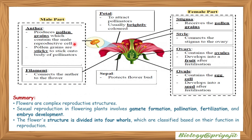The anther produces pollen grains which contain the male reproductive cell. Pollen grains are sticky to cling to the bodies of pollinators. The filament connects the anther to the flower. Petals attract pollinators — usually brightly colored. Sepals protect the flower bud. The female part consists of stigma, style, and ovary. The stigma receives the pollen grains; the style connects the stigma to the ovary.